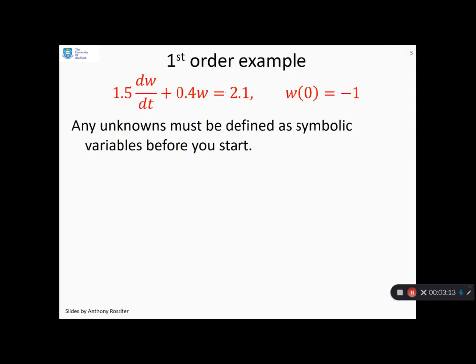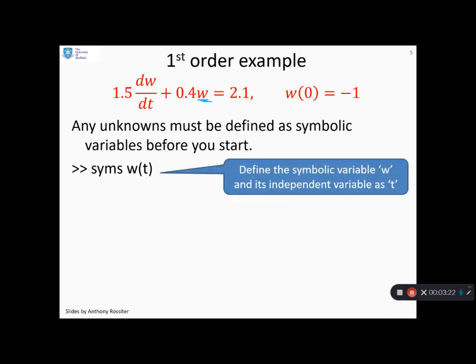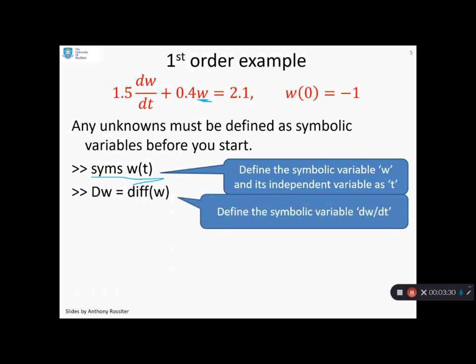So another example. All that I've changed in this example is I'm using a variable w instead of a variable x just to make it clear that the code doesn't really care. So here you see now my first command is syms and I've put w(t). And I'm going to do dw equals diff(w). And otherwise, you'll see the syntax is the same as you had before. So we've got wt, my solution, is dsolve and then you'll see I've put the differential equation in here with a comma followed by my initial condition.